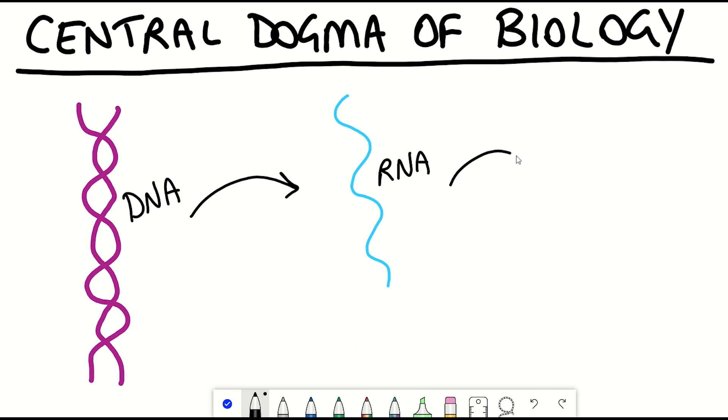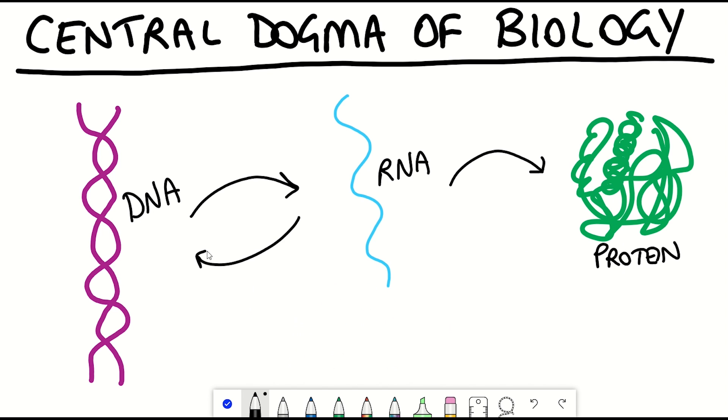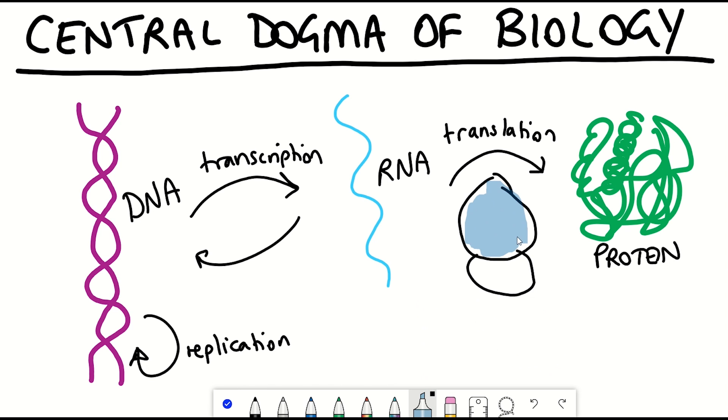And so the central dogma was termed by Francis Crick, which describes the process by which the information in DNA is converted into a functional product. And the stages of that are first the transcription of DNA into RNA, which is the messenger that takes it out of the nucleus into the cytoplasm, where that message is read by the ribosome and translated into protein.